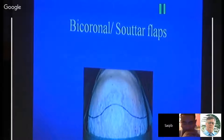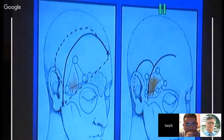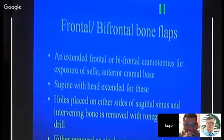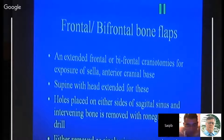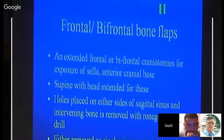The bicoronal bone flap is suitable for frontal lobe, subfrontal approaches, anterior skull base, and transparticular access to the ventricles. Incision size can be reduced depending on the target area. Frontal bone flaps involve extended frontal or bifrontal craniotomy for exposure of the sellar and anterior cranial base. With the patient supine and head extended, burr holes are placed on either side of the sagittal sinus and the intervening bone is removed as a single piece, or the frontal flap is converted to a bifrontal form. Combining the frontal flap with the pterional flap reduces the incision size.